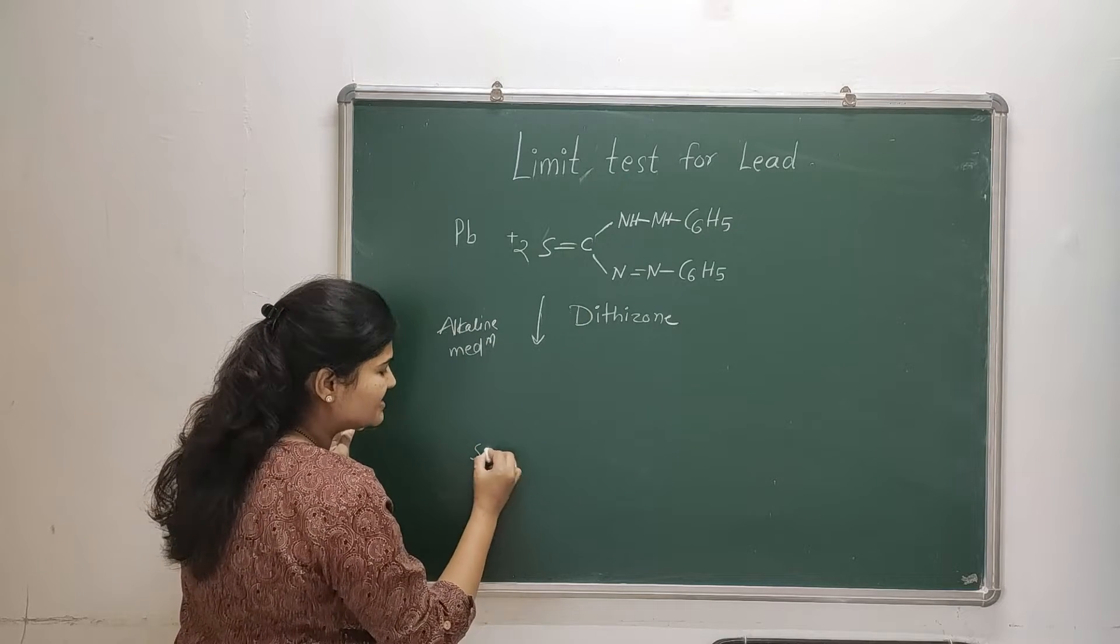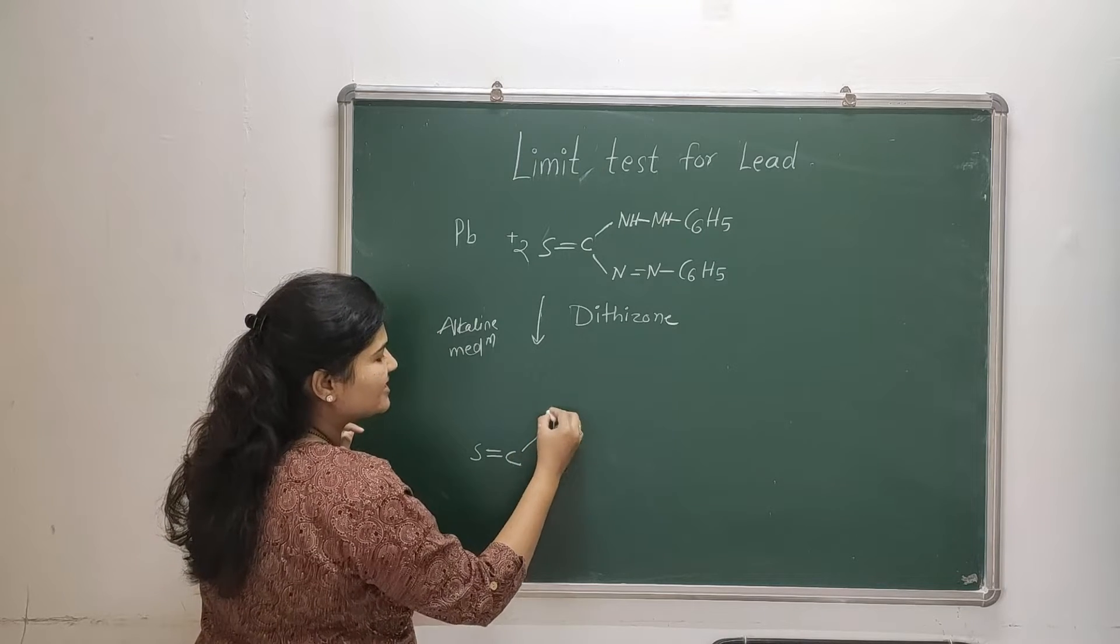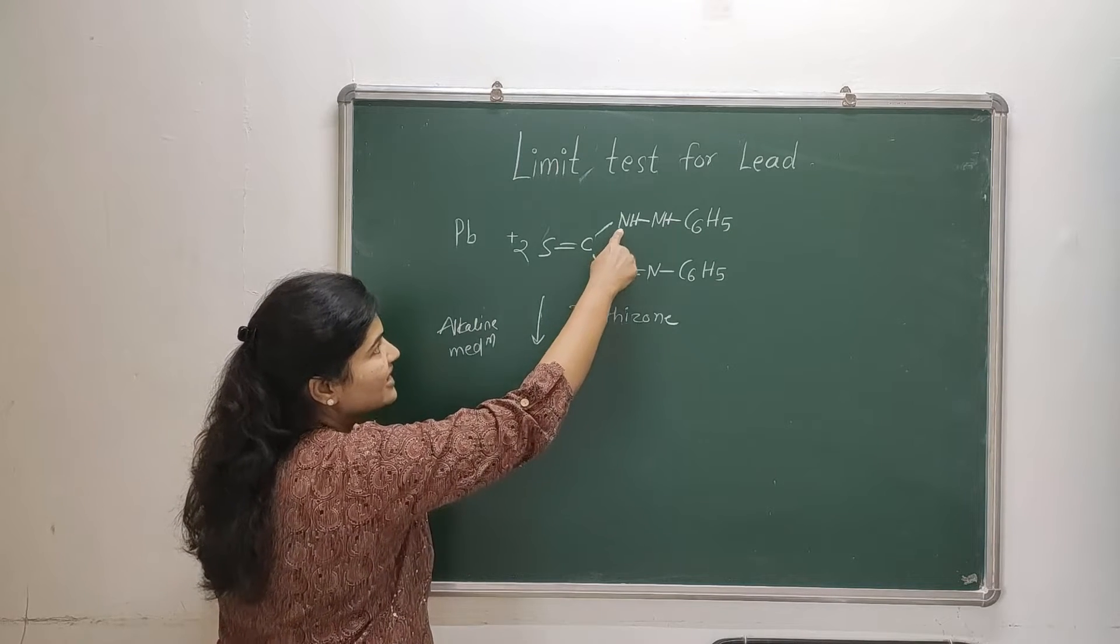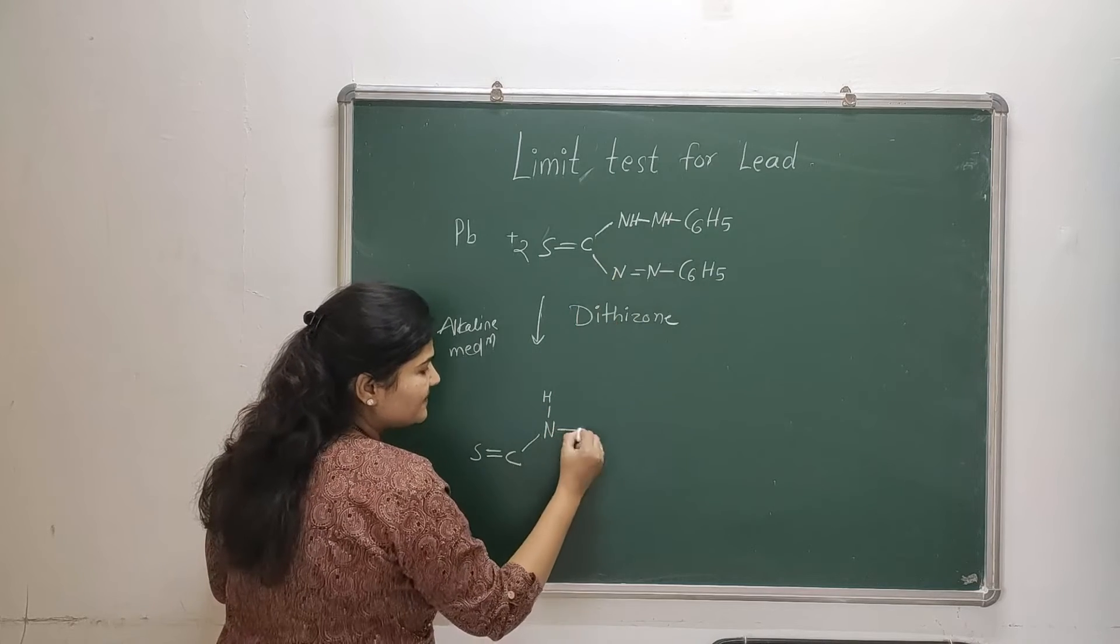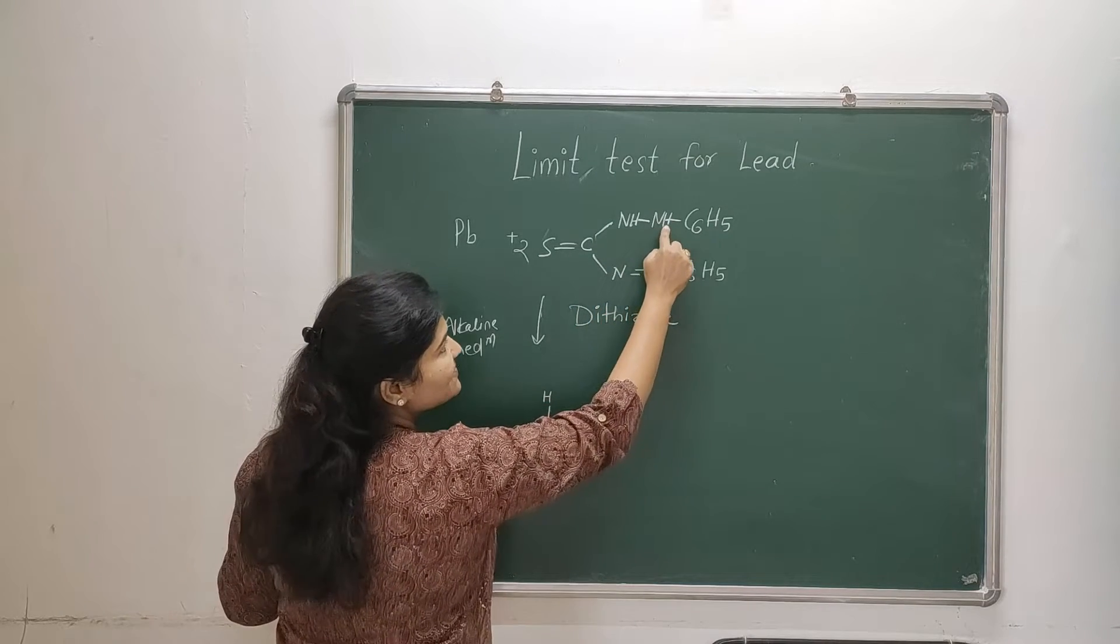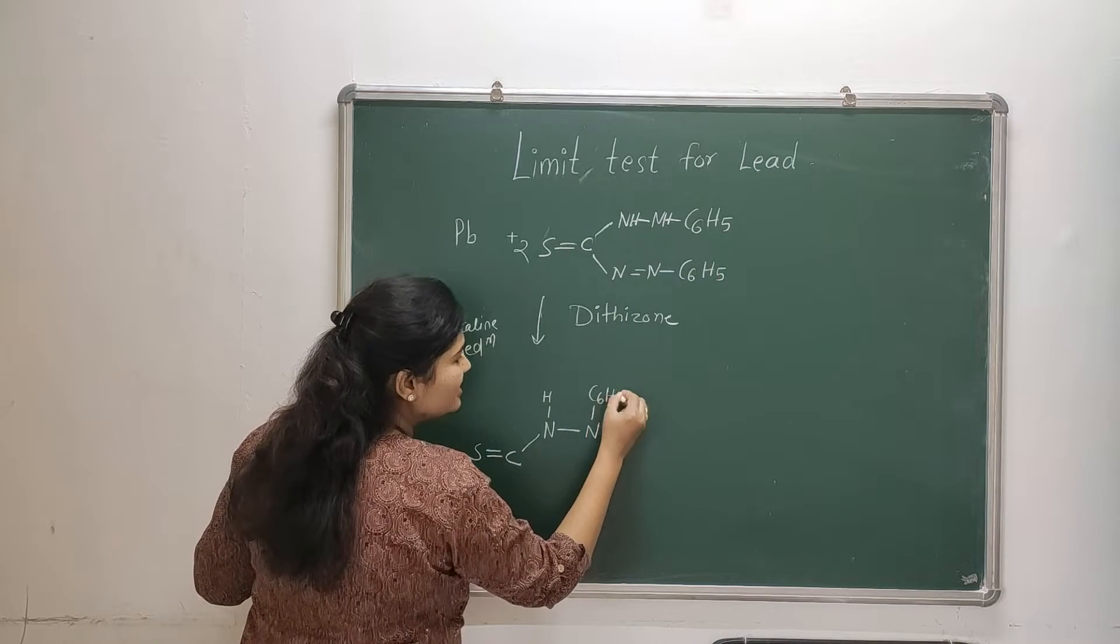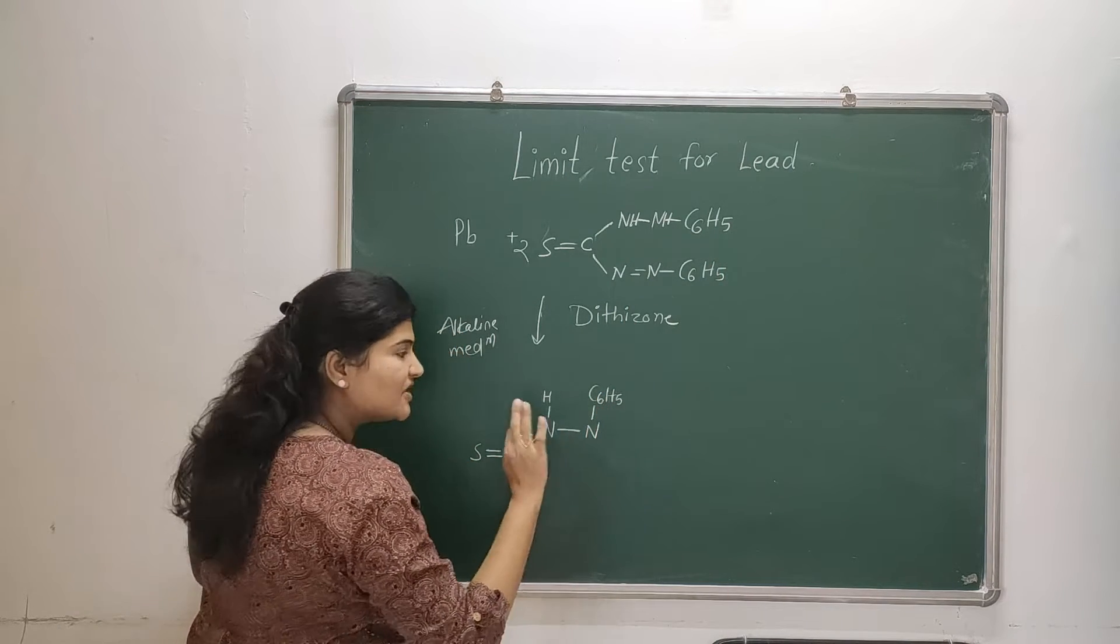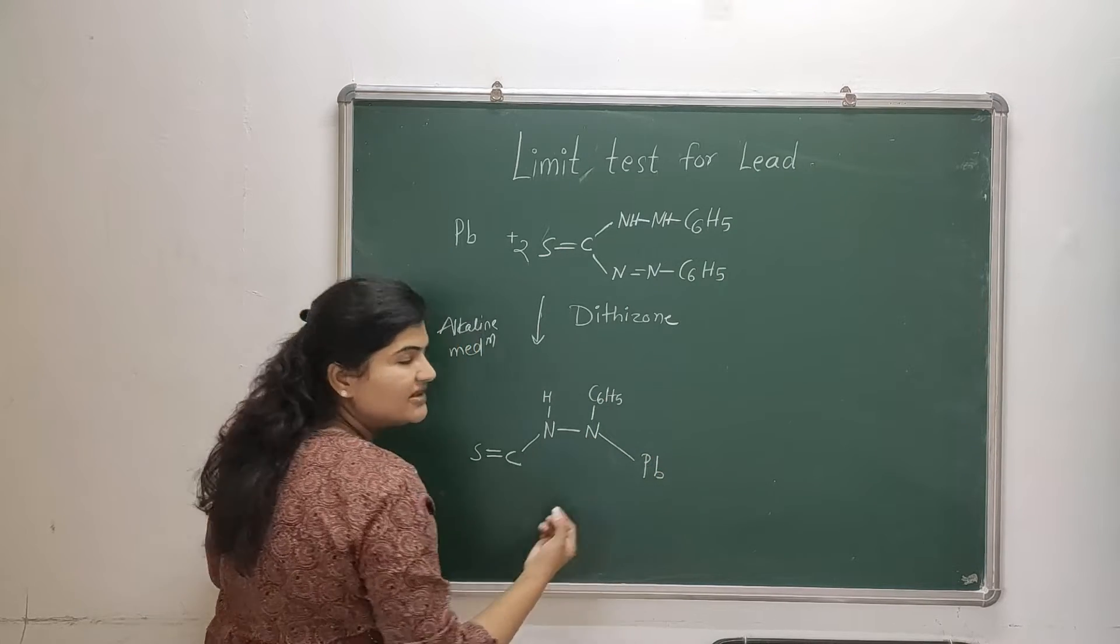So this hydrogen is attached to nitrogen. Then what I will do - for this nitrogen there is one hydrogen and one phenyl group, so I will draw my phenyl group here and hydrogen will be removed and instead of that, lead will be attached.